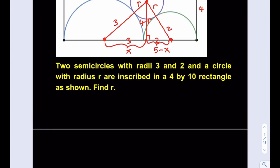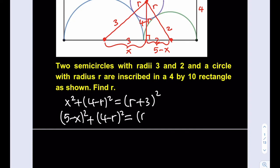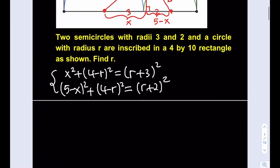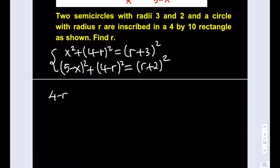Let's go ahead and write down our equations from here. I'm going to be using these two right triangles with the Pythagorean theorem. So I have x squared plus 4 minus r squared, which is equal to r plus 3 squared, and then from the second equation, I get 5 minus x quantity squared plus 4 minus r quantity squared. Again, 4 minus r is repeated because they're sharing the same height, and that's going to equal r plus 2 quantity squared.